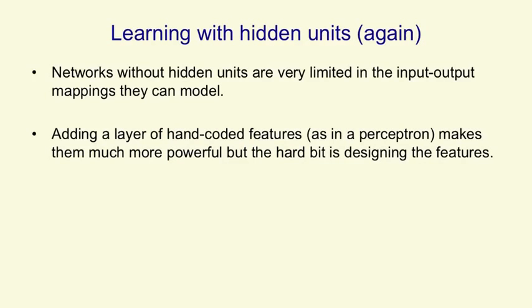Now that we know how to learn the weights of a logistic unit, we're going to return to the central issue, which is how to learn the weights of hidden units. If you have neural networks without hidden units, they're very limited in the input-output mappings they can model. If you add a layer of hand-coded features, as in a perceptron, you make the net much more powerful, but the difficult bit for a new task is designing the features.